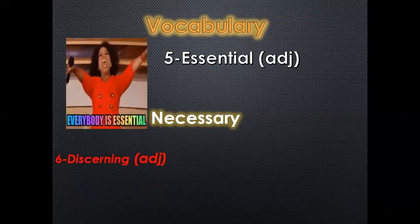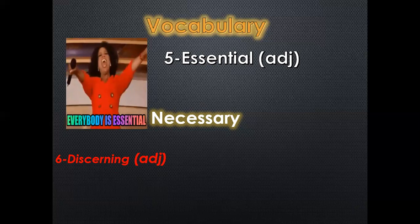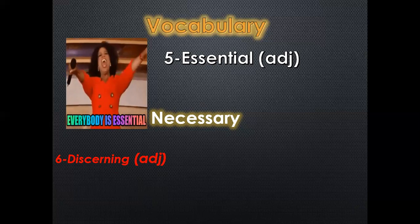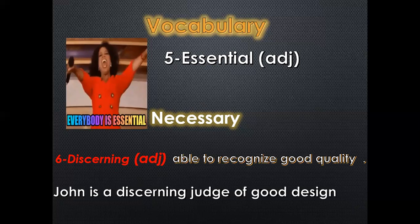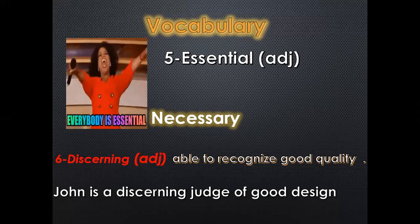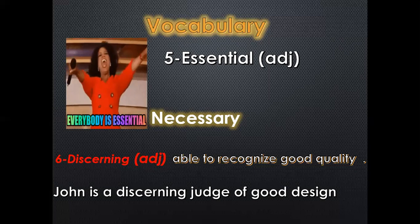What about the word 'discerning'? It is an adjective that means 'mudrik.' When you have a discerning taste of music, it means you are able to distinguish between good and bad music. So discerning means able to recognize good quality of something. For example: John is a discerning judge of good design — he can tell us what is good and what is bad.